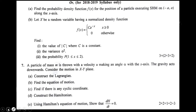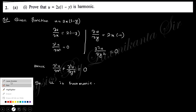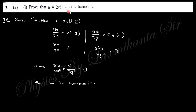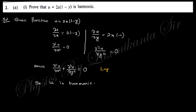Let's start. The first question says: prove that u = 2x(1−y) is harmonic. Harmonic means it satisfies the Laplace equation. Any function that satisfies the Laplace equation is called harmonic. For the given function u = 2x(1−y), take the partial derivative with respect to x, which gives 2(1−y).